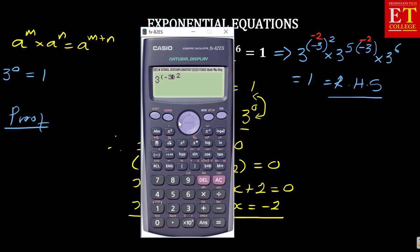In this case, x is negative 2 — so it's not minus 3, it's minus 2. Squared, times 3 to the power of 5 times negative 2, times 3 to the power of 6.